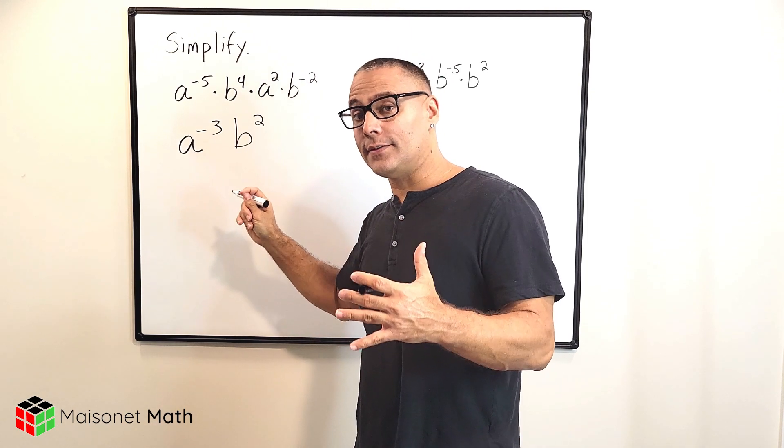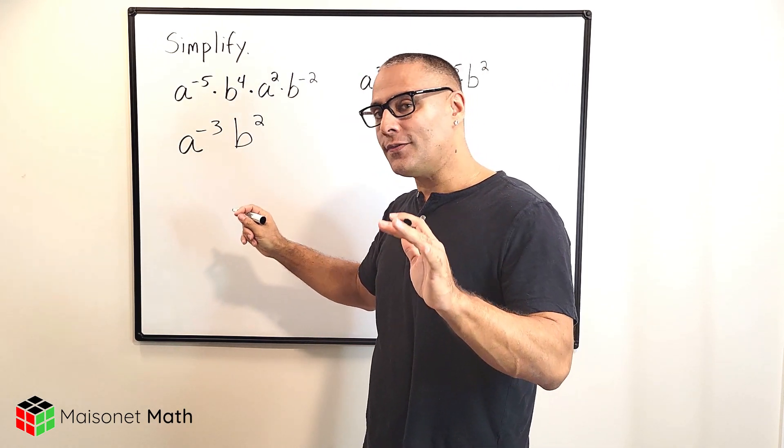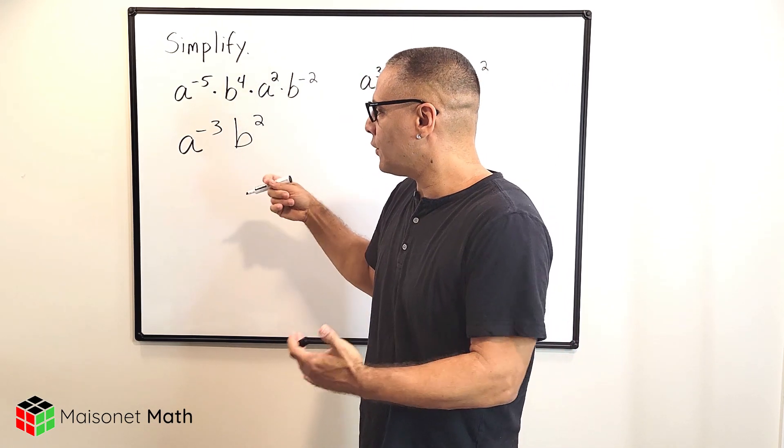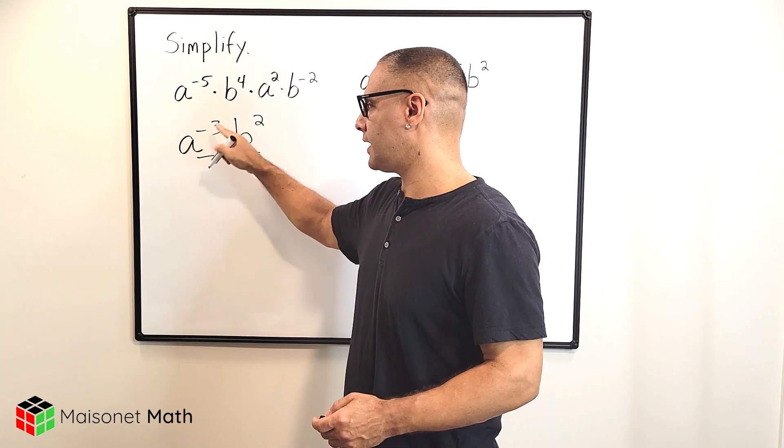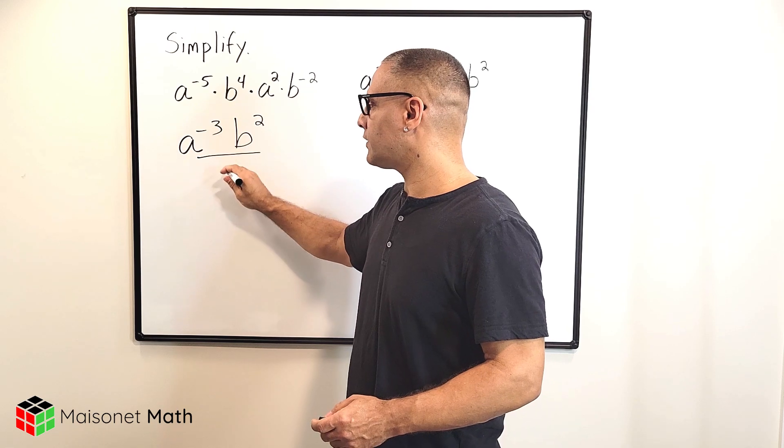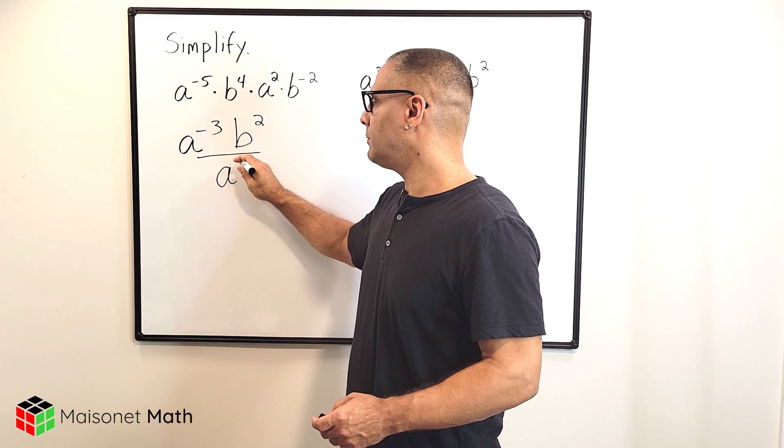Now for your answer, you cannot leave an exponent negative. So if that happens, what you do is, if there is no fraction bar, you have to create one. And then you take that variable with the negative exponent and you write it on the other side as a positive.